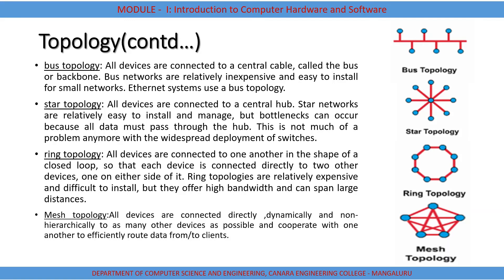The third type is ring topology. Here the devices are connected one to another — one device is connected to the next device, the next device to another, and so on, forming a circle, as you can see in the diagram. Next is mesh topology, where devices are connected directly and non-hierarchically, meaning one device is connected to two, three, or all devices in the network. It is a combination of all topologies.